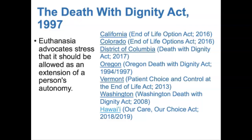Oregon was the first state to pass the Death with Dignity Act in 1997, and six states and Washington D.C. now have Death with Dignity statutes shown here. Euthanasia advocates stress that it should be allowed as an extension of a person's autonomy, but those who are against euthanasia often say that it can lead to the devaluation of human life and a slippery slope in which the old and disabled will be killed on the whims of healthy people. The Death with Dignity Act and euthanasia in general are classic examples of ethics and ethical debates in medicine.